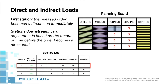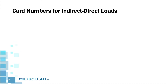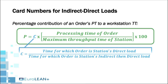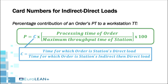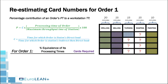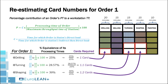This understanding is used to adjust the number of cards attached to an order. The adjustment is based on the amount of time expected for the order to take before it arrives at the stations and becomes a direct load. The same formula for percentage contribution is applied to convert required processing time into a card equivalent, but it is now multiplied by a factor C that adjusts for the time the order will spend upstream before arriving at the station. P is then divided by the percentage each card represents. Applying this to Order 1 keeps drilling results the same but gives different results for turning and shaping.